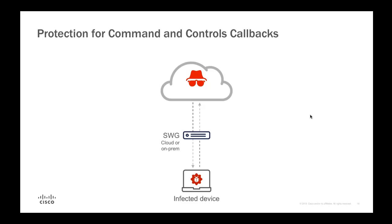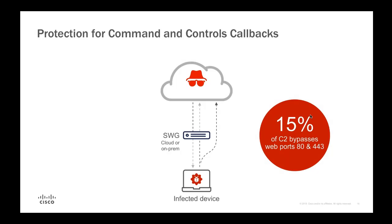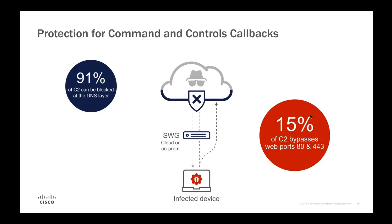Research by Lancope, now part of Cisco, found that 15% of command and control traffic bypasses web ports covered by traditional web security systems — leaving a gap if you're relying solely on security gateways or perimeter security. Additional Cisco research found that 91% of command and control traffic relies on DNS. By using Umbrella, you can block the vast majority of those command and control callbacks. Umbrella can also block direct IP connections and proxy data to block specific malicious URLs.